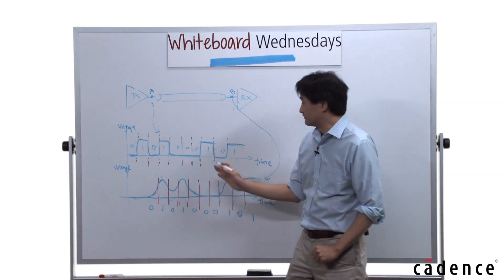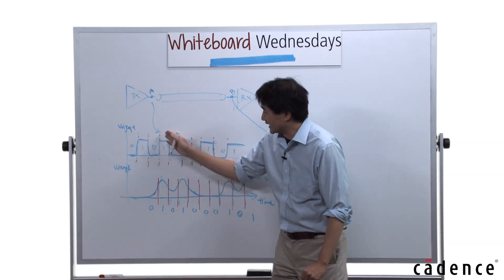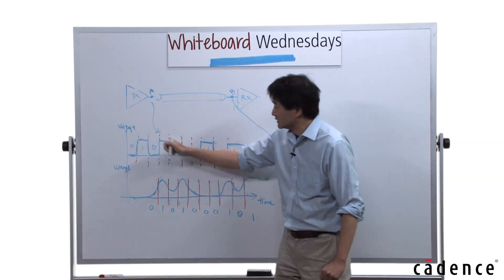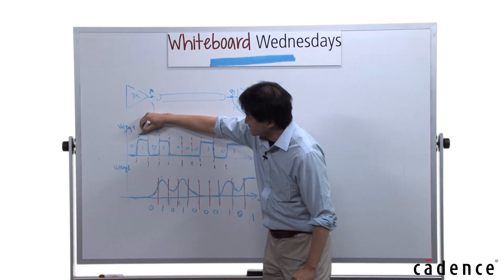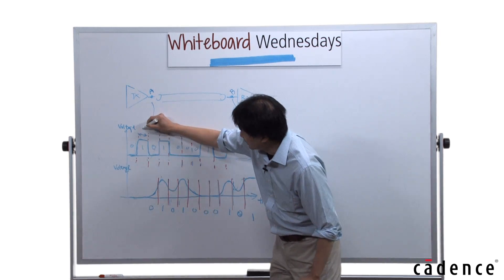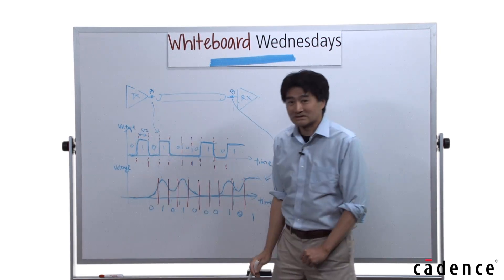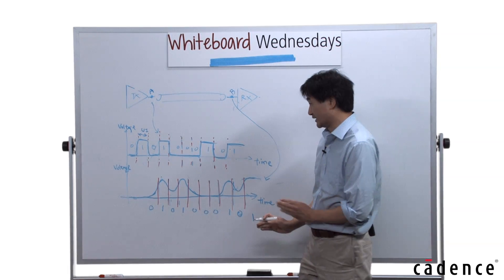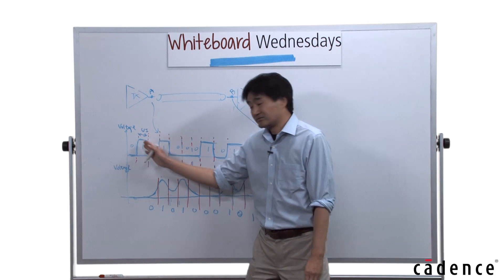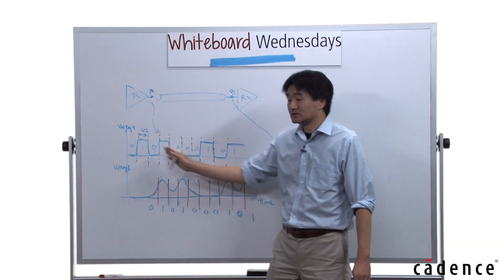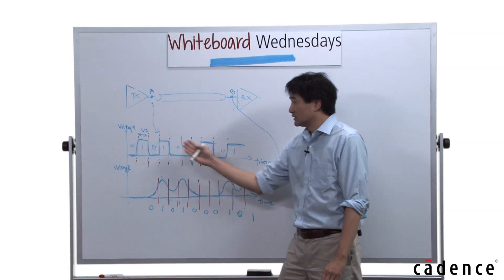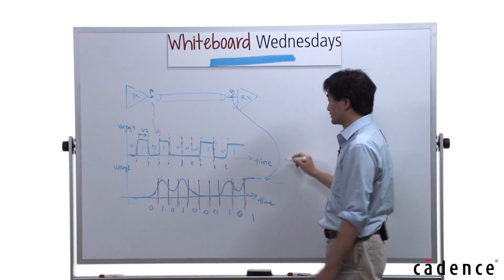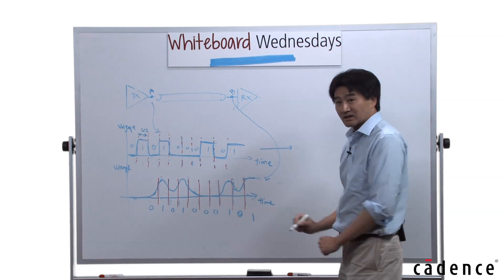One thing I should mention: the lines I draw here are the bit boundaries. This is the bit time, and we call it UI, which stands for unit interval. The way to generate the eye diagram is to slice your data in the bit window and fold it on top of each other — and what you get is the eye diagram.